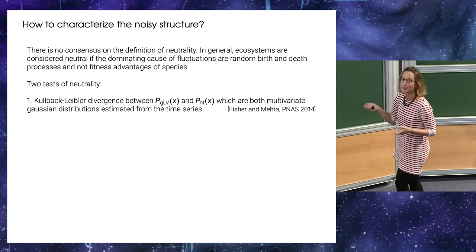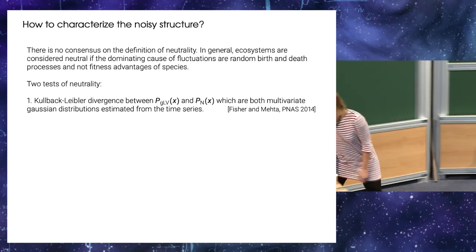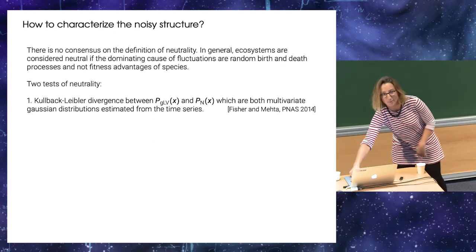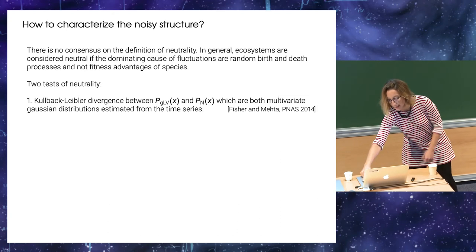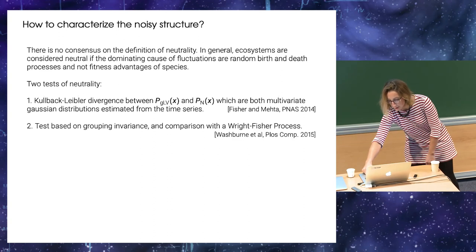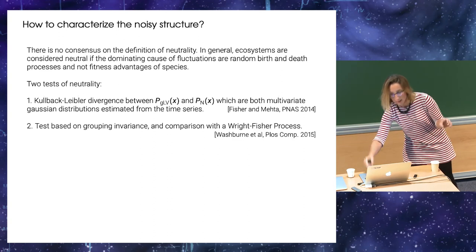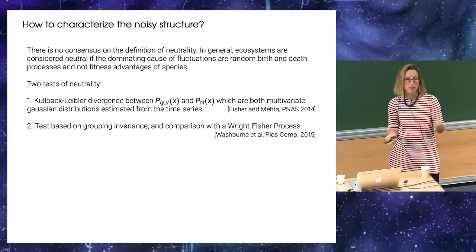So one is based on the Kullback-Leibler divergence, which is basically comparing two probability distributions. And another one, which is comparing, like, which is testing the invariance under grouping of the community. So you, if you group species, like you say species one and species two, we put, we sum them together, we consider them as one group. And species three, four, five, or we like, we change the grouping of the species.